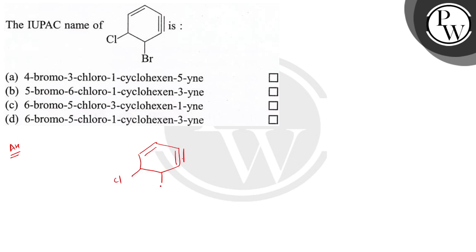The parent molecule is cyclohexane here. So if the double bond has priority, then where will the numbering start? It will start from the double bond. Now the numbering on this side